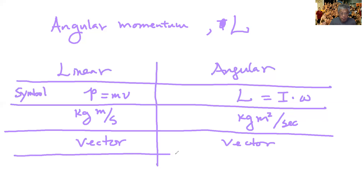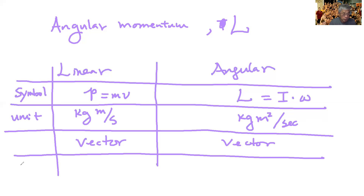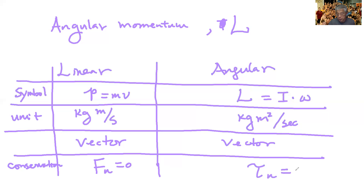For conservation: linear momentum is conserved when the net force is equal to zero, and angular momentum is conserved when the net torque is equal to zero.